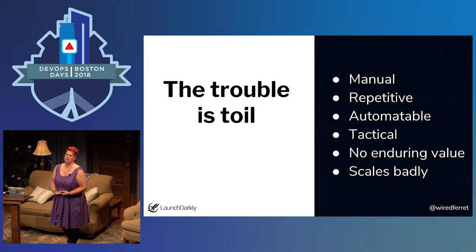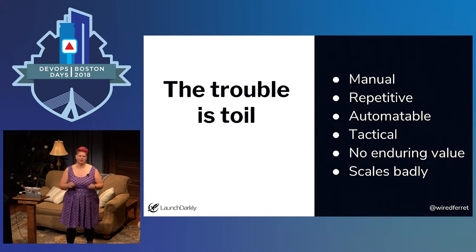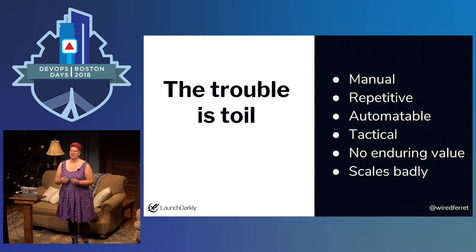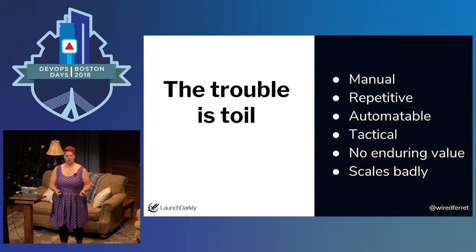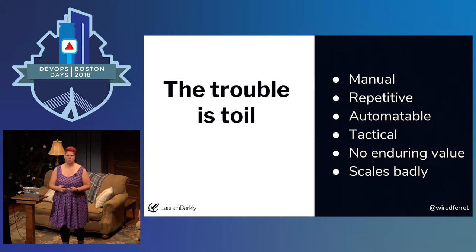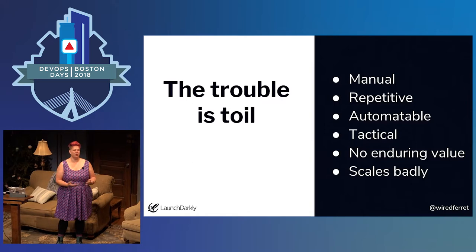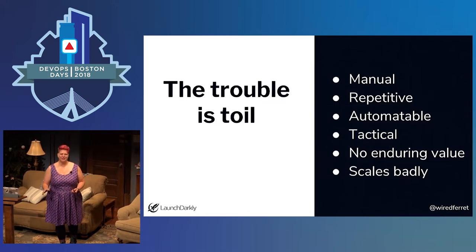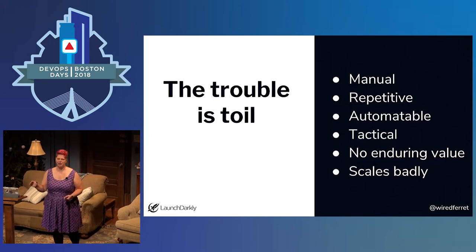The trouble with what we're doing is toil. This is something that appears in the Google SRE book. Liz Fong-Jones defines toil as work that is manual, repetitive, automatable, tactical, has no enduring value, and costs you to scale. So when we're testing, are we creating tests that are toil? Are we creating tests that don't scale? Are we creating tests that are only tactical? Or are we taking a little time to think about tests that are not toil? Automate away as much as you can — we have better things to do with our time.